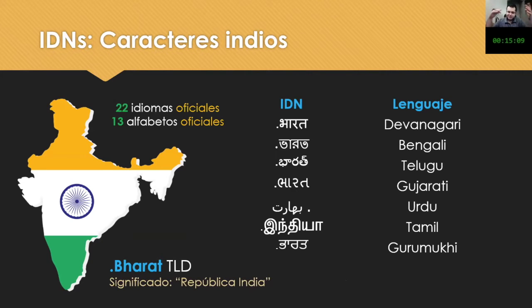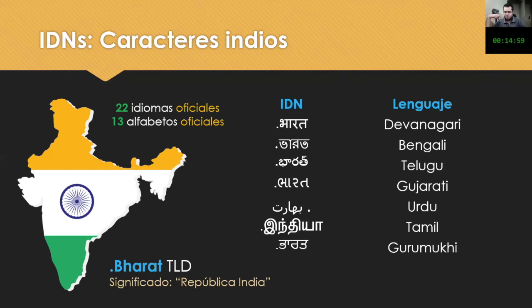India has 22 official languages, 13 official alphabets, and there are specific alphabets for the languages. So it's a sort of diversity policy.